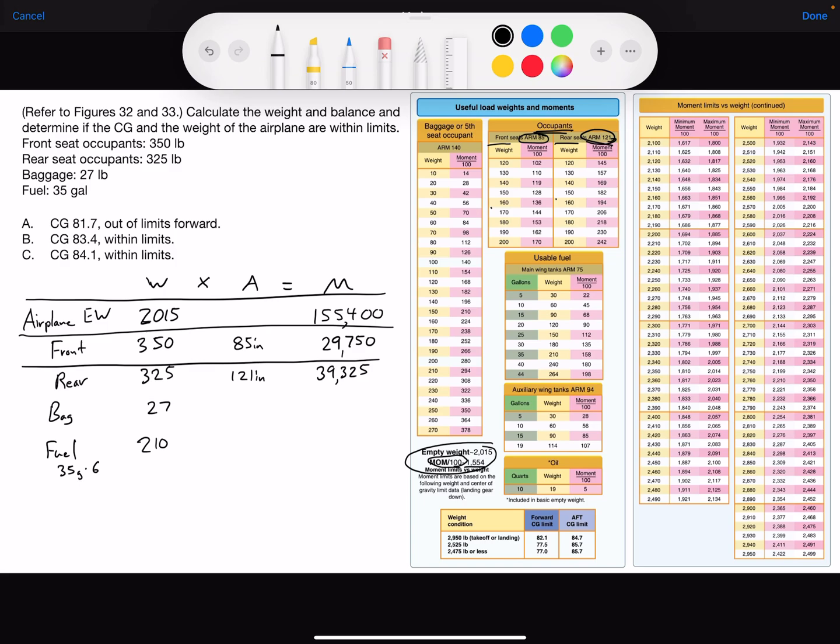Baggage, we have 27 pounds. Here's baggage right here. And you'll find the arm is 140. 27 multiplied by 140 gives us 3,780.